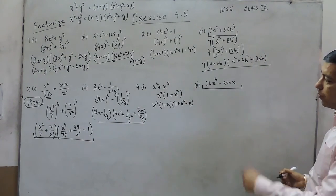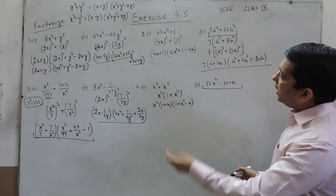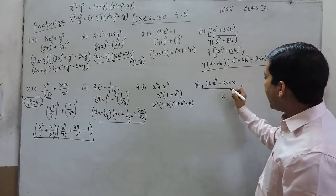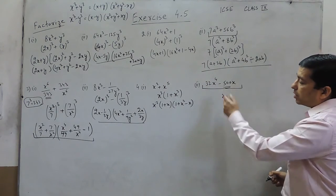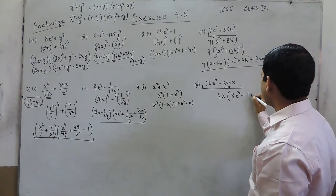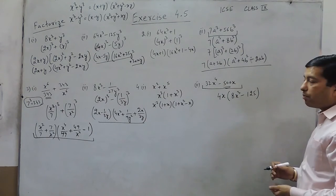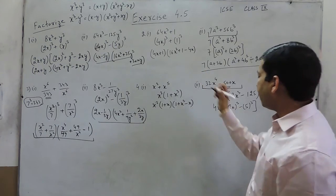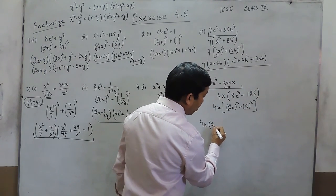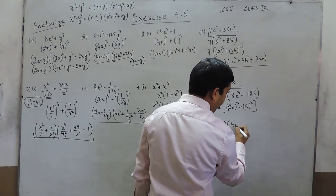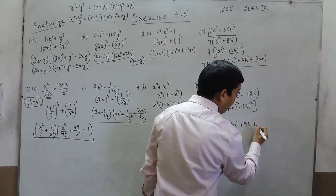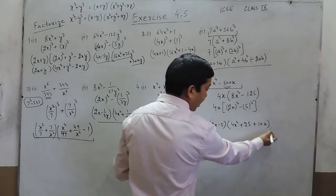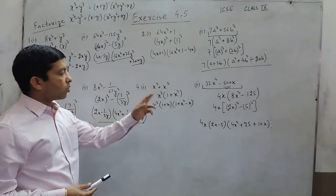For part 2 of question number 4, these are not perfect cubes directly, so we take 4x common, which gives 4x(8x³ − 125), where 8 is a perfect cube and 125 is also a perfect cube. So 8x³ − 125 can be written as (2x)³ minus 5³. Applying the identity, it becomes 4x times (2x − 5) times (4x² + 25 + 10x). This is the factorization of part 2 of question number 4.